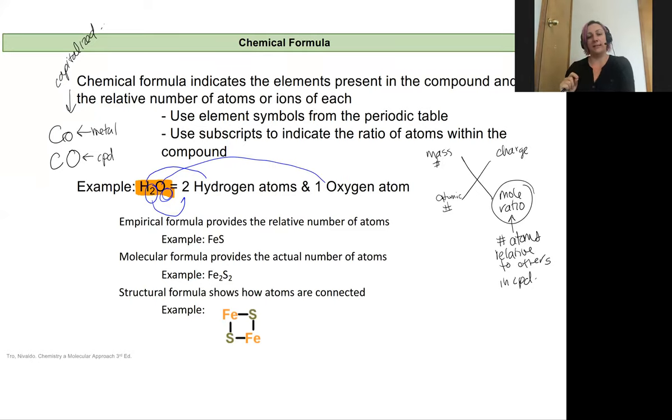Let's take a look at empirical versus molecular versus structural formulas. An empirical formula is our lowest common denominator—it's the relative numbers of atoms within the compound to one another. It's our most reduced form of our chemical formula. I might have something that is iron and sulfur, then I have one iron for every one sulfur in this compound.